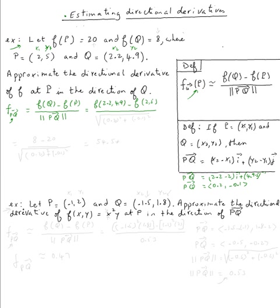Now I need the norm of that vector. The norm is the square root of (0.2)² plus (-0.1)². This gives us the denominator. For the numerator: f of q is given as eight, and f of p is given as twenty. So we have (8 - 20) divided by the square root of (0.2)² + (-0.1)². If you use your calculator, you're supposed to get negative fifty-four point fifty-four.